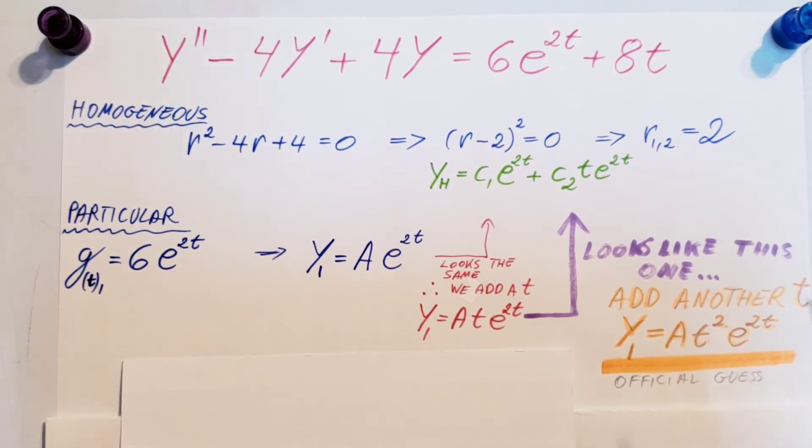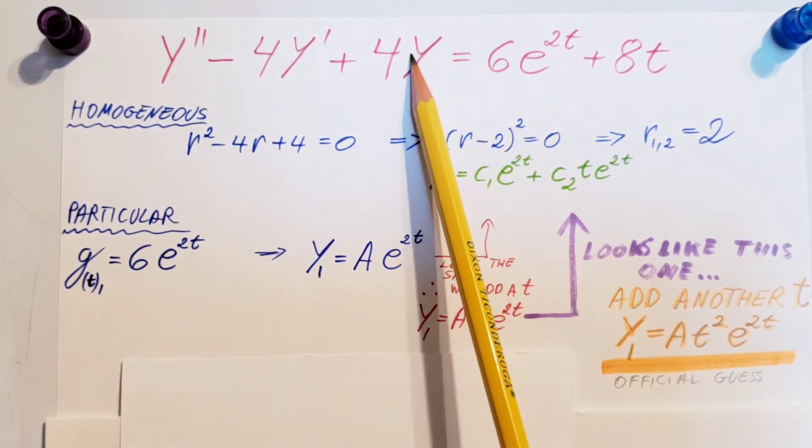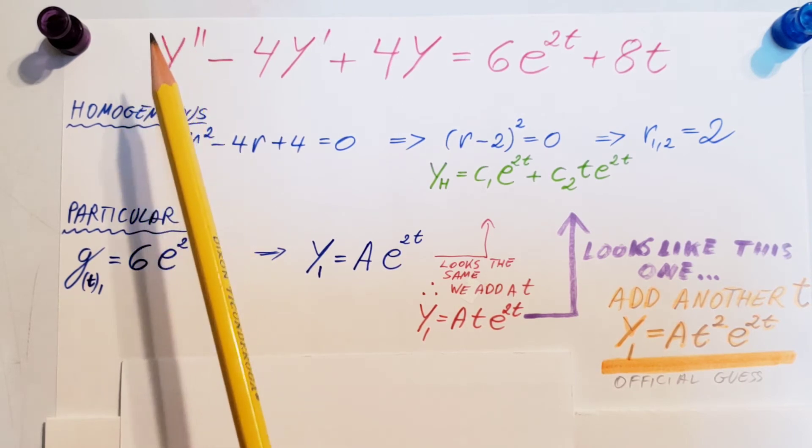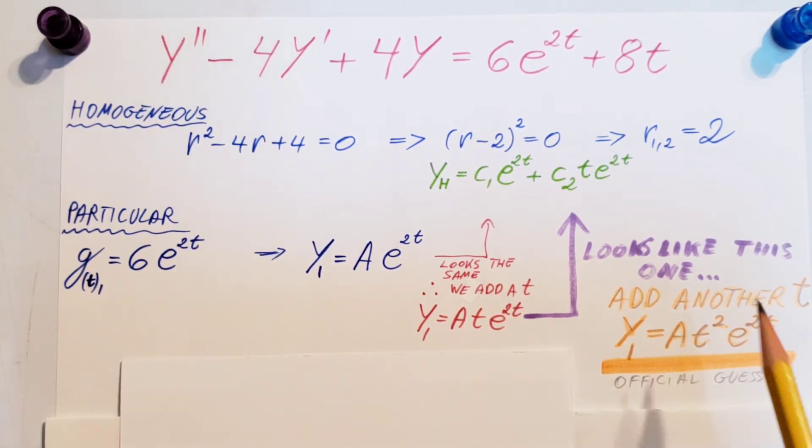We will have to plug our guess back into our ODE, but in order to do that, we have y here, that goes here, but we also need y prime for this term, and we're going to need y double prime for this term. So, that's what we're going to do next. Take two derivatives of this.